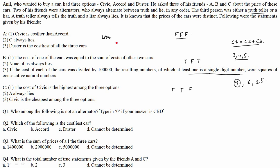Now let's check the pricing arrangement. A's first statement — 'Civic is costlier than Accord' — is false, so Civic is not costlier than Accord. A's third statement — 'Duster is the costliest of all three cars' — is also false, so Duster is not the costliest. This eliminates the case where Duster is at the top. We are left with two possible arrangements where Duster is in second or third position.